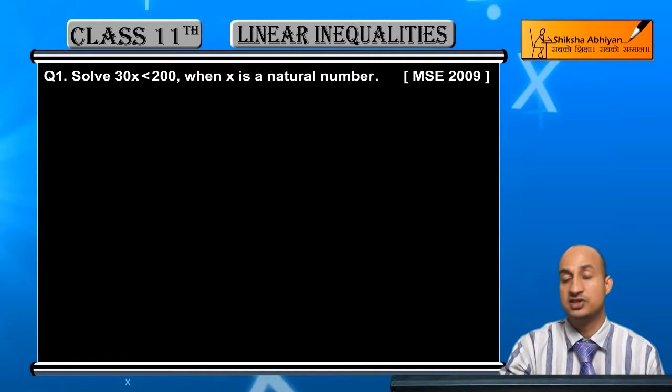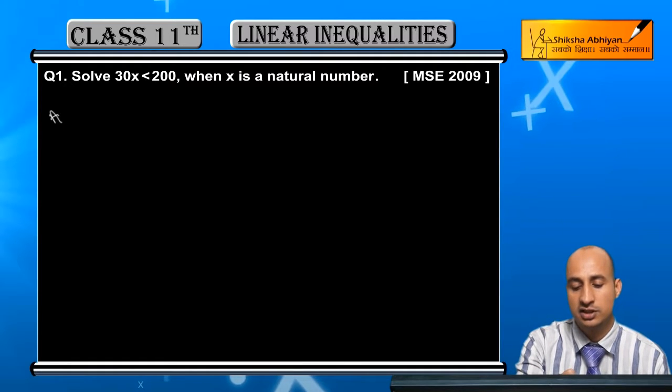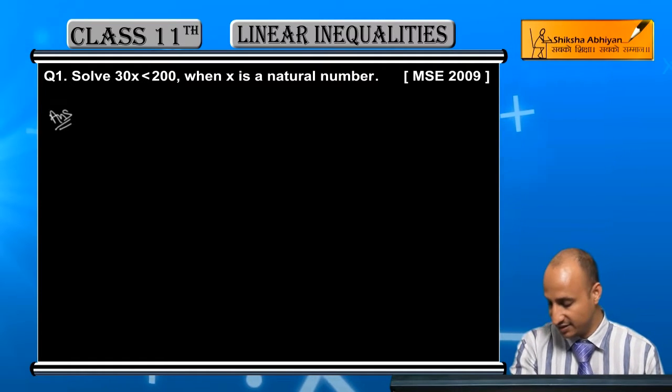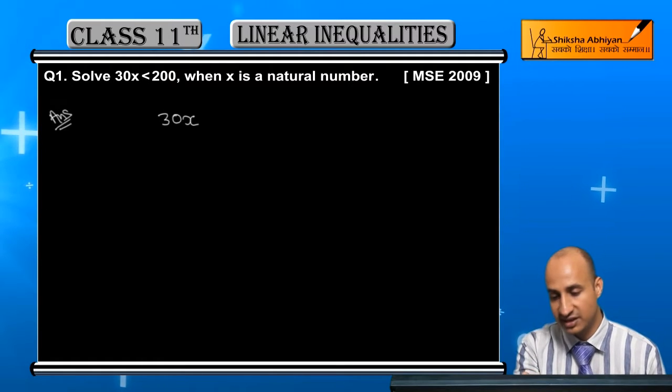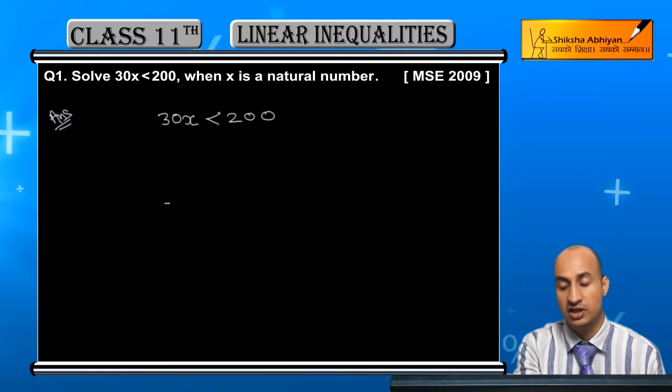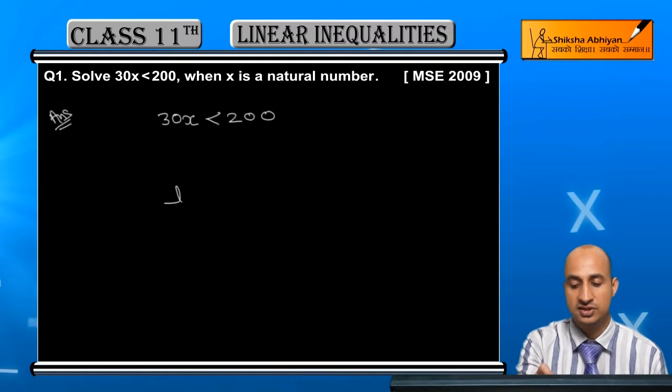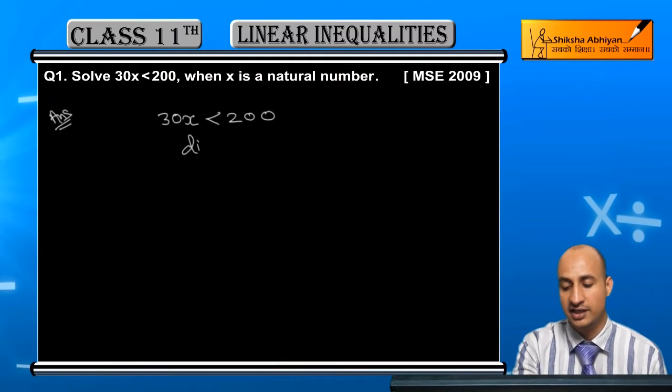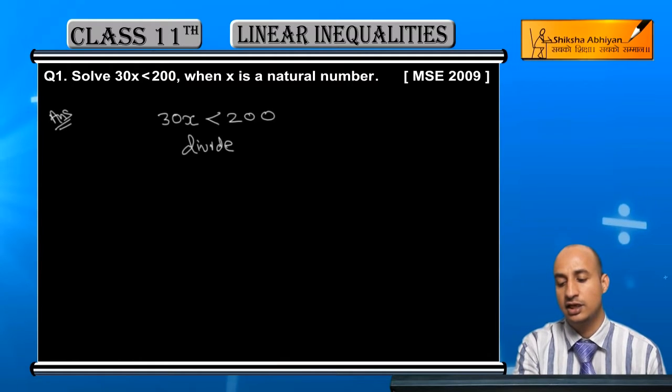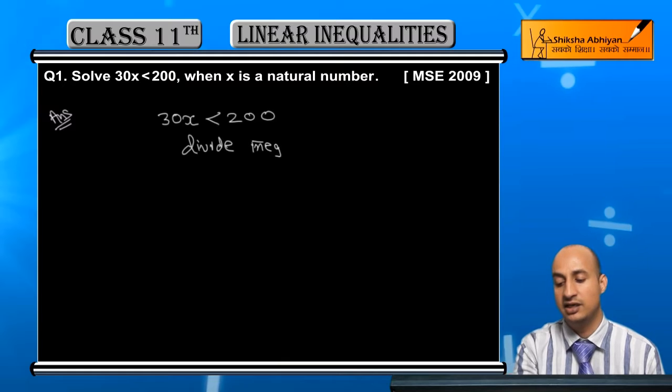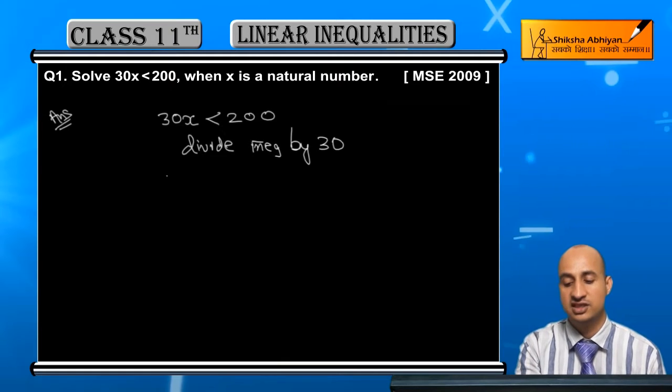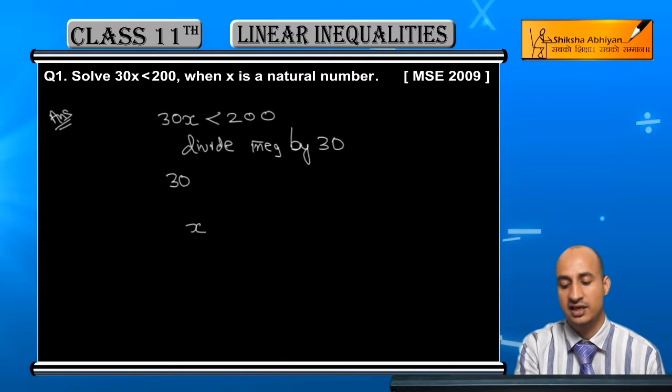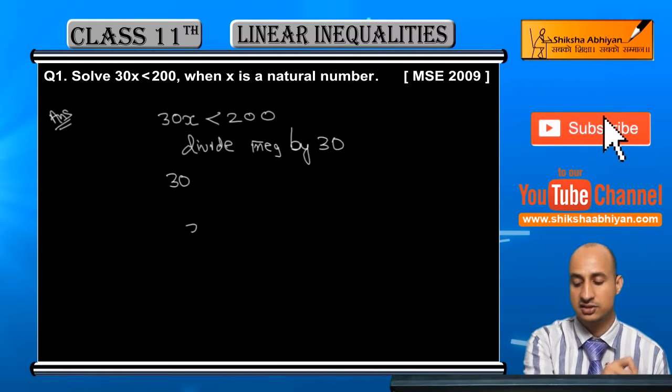First of all, I will write down the inequality: 30x less than 200. So if I divide this inequality, divide inequality by 30, we will write 30x upon 30.